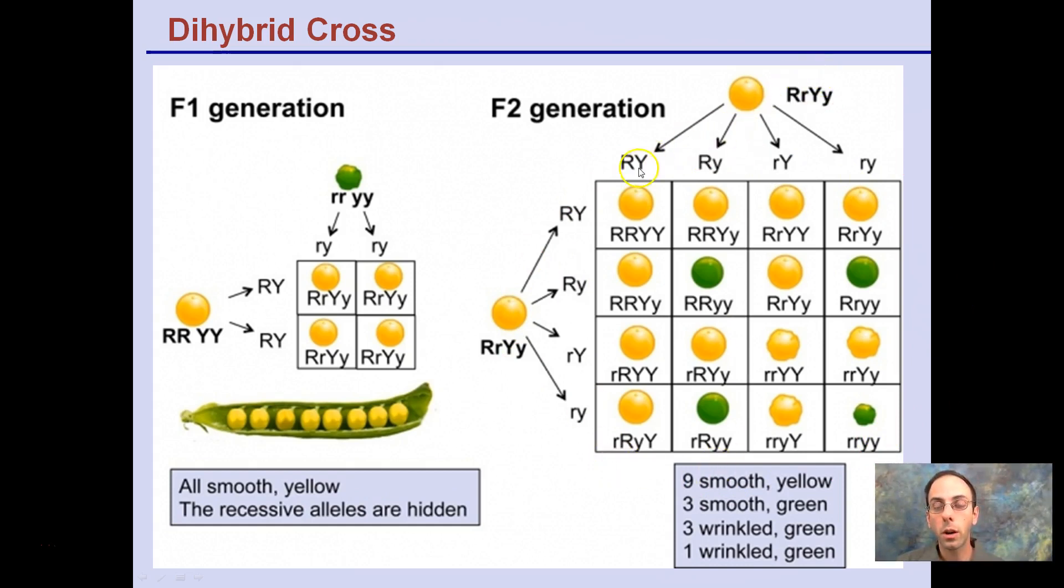Remember the gametes are distributed: big R with big Y, big R with little y, little r with big Y, little r with little y in the same hand. We just simply drag and cross them together. Keep like alleles together and it'll be a whole lot easier.